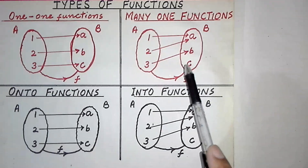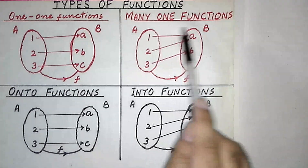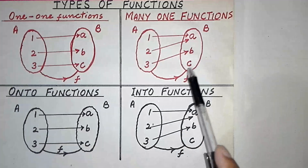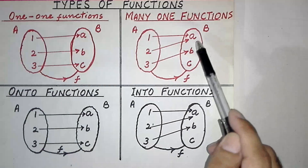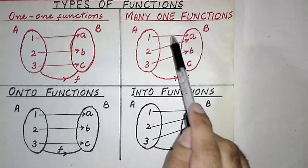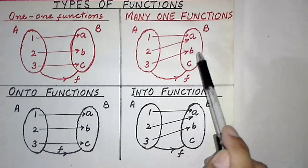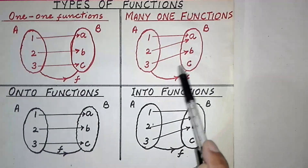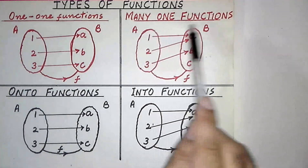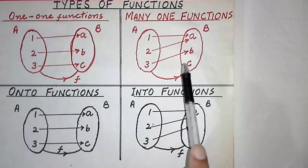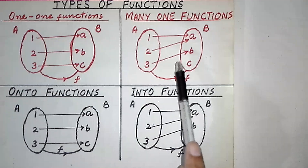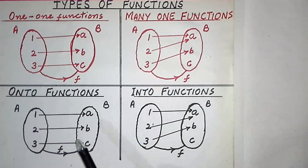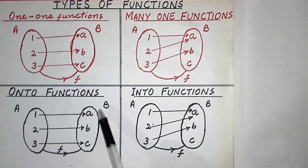If one or more than one second elements of ordered pairs are repeated, then the function is called a many-one function. Here the second element 'a' of ordered pairs is repeated, so this is an example of a many-one function.